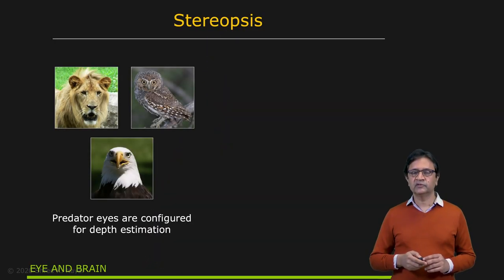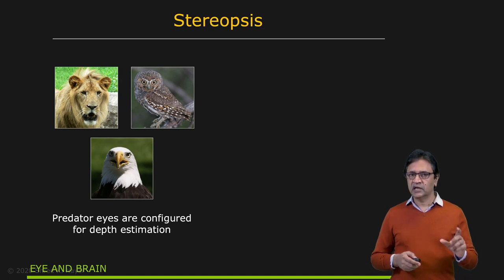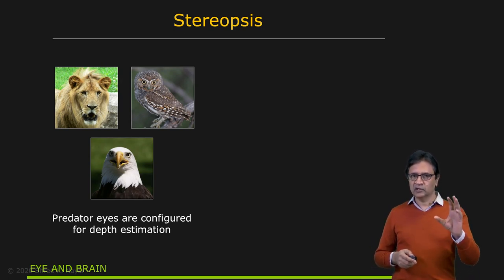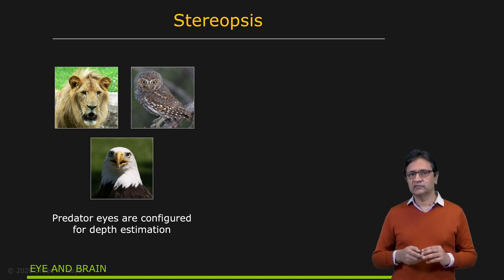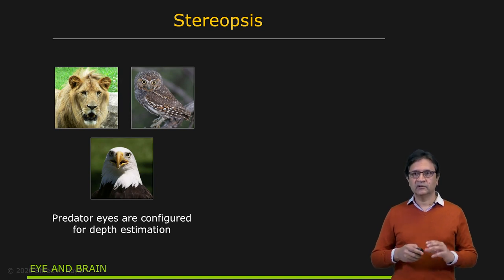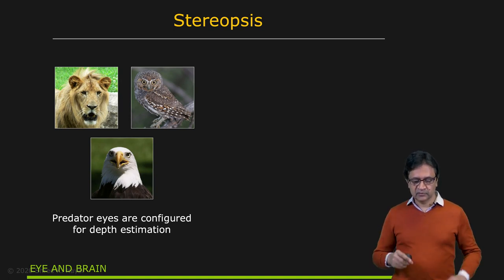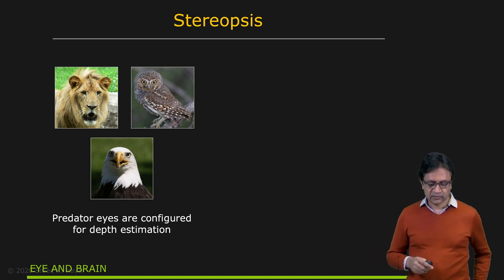Let's take a look at some stereo vision systems in nature. This is often referred to as stereopsis. Stereo is Greek for solid and opsis is Greek for appearance — that's where the term stereopsis comes from.